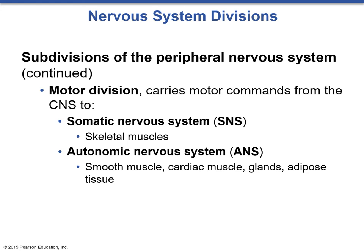The somatic nervous system — 'somatic' meaning body — controls skeletal muscles. For example, if we visually see a bee coming at us, we process that information and send out a motor command to run away or swat the bee, engaging skeletal muscles. The autonomic nervous system — think 'automatic' — uses smooth muscles, cardiac muscles, glands, and adipose tissue: the stuff that is automatically controlled without conscious thought.